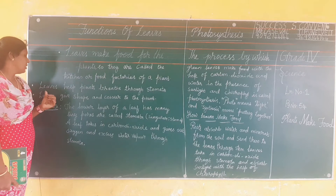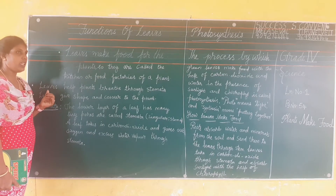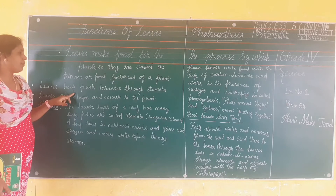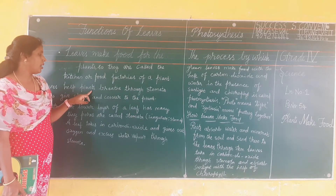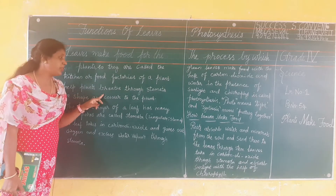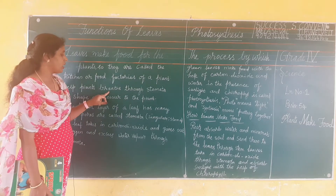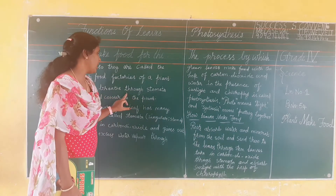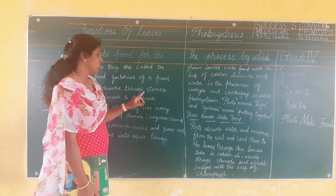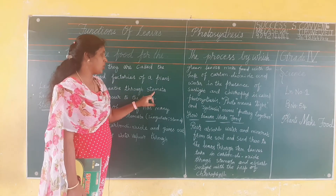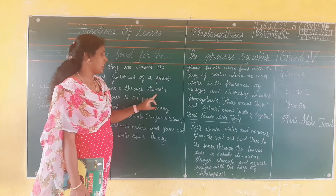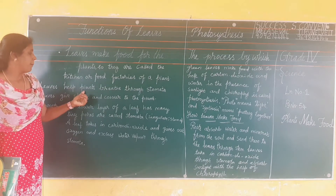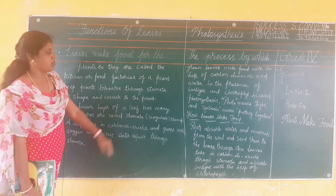Number 2: leaves help plants breathe through stomata. Leaves help plants breathe through stomata.